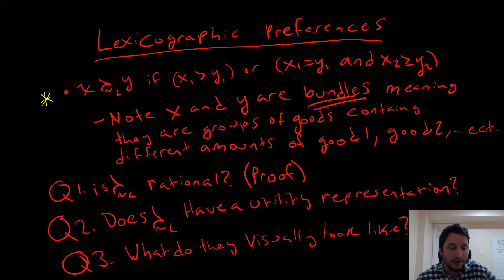Starting from our definition here, we say X is lexicographically preferred to Y if X1, the amount of good one in bundle X, is greater than that in bundle Y, or the amounts of good one is the same in each one, but for good two in bundle X, that's greater than or equal to Y2, the amount of good two there.